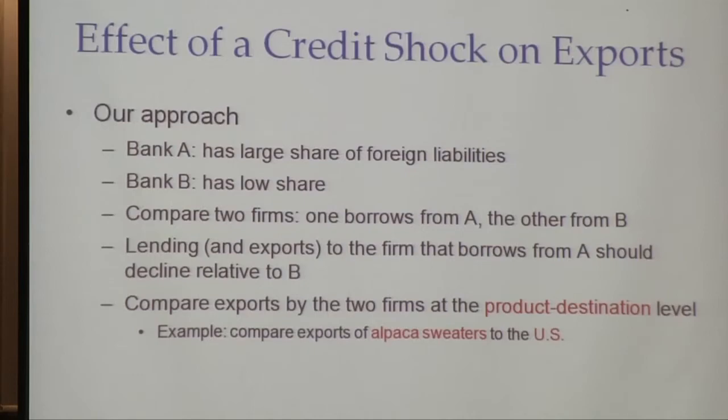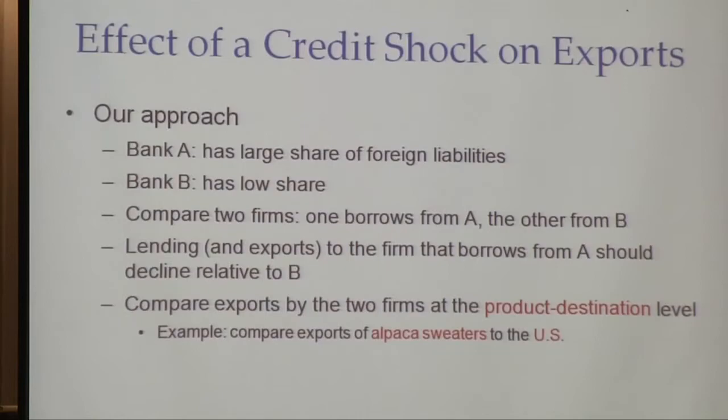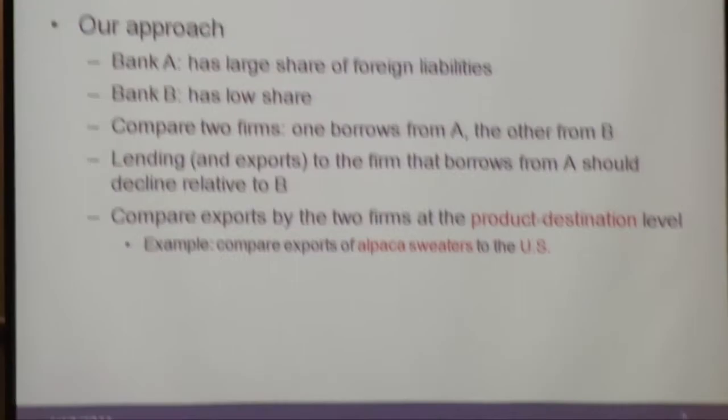Think about what this does. If there's any shock to the price of alpaca, it will in principle affect both firms the same way. If there's any shock to global demand for sweaters, it should affect both firms the same way. If there's any destination-specific shock — for example, U.S. retailers' demand for sweaters goes down, or U.S. retailers themselves are financially constrained because of the financial crisis — that also should affect both firms the same way. So that's our trick to deal with all demand factors. If you take out everything that has to do with demand, what remains is credit supply.